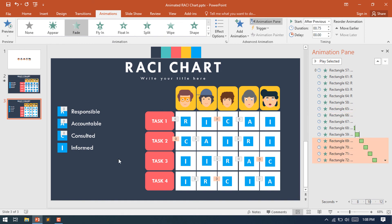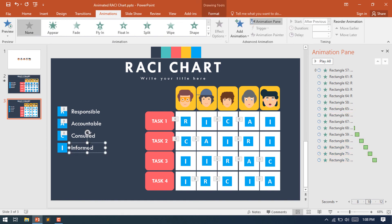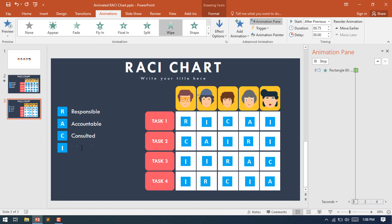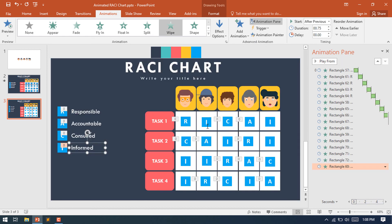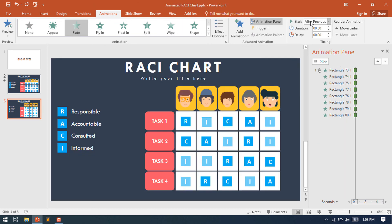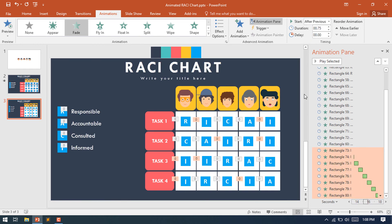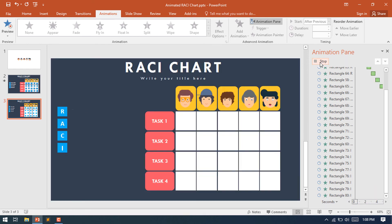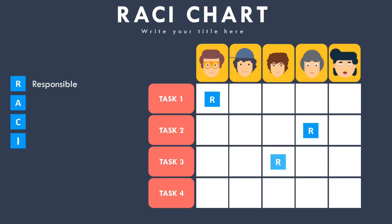Increase the duration for the Consulted shapes. Do the same process for Informed — select the Consulted text, use Animation Painter, then select Informed. Then select the Informed shapes from each task, select Fade animation, make all animations After Previous, and increase the duration to 0.75 seconds. Here is our RACI chart animation complete.